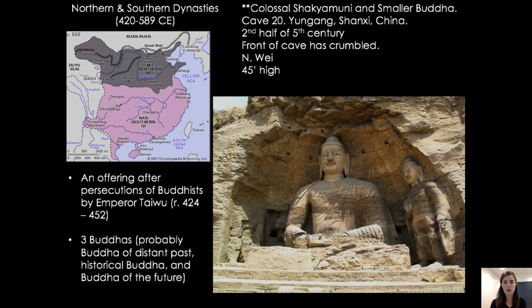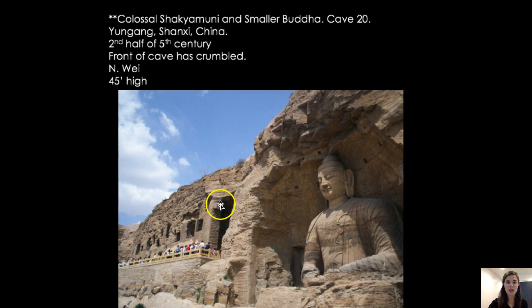For an emperor hoping to make an offering to repent for what had happened, this was what he was able to create. You can see that the Buddha has the usnisha and those large earlobes. This is just another image to give you a sense of scale — you can see individuals entering into the rock caves, and there were lots of images as part of these cave complexes. I'm just showing you one of the most famous sections.